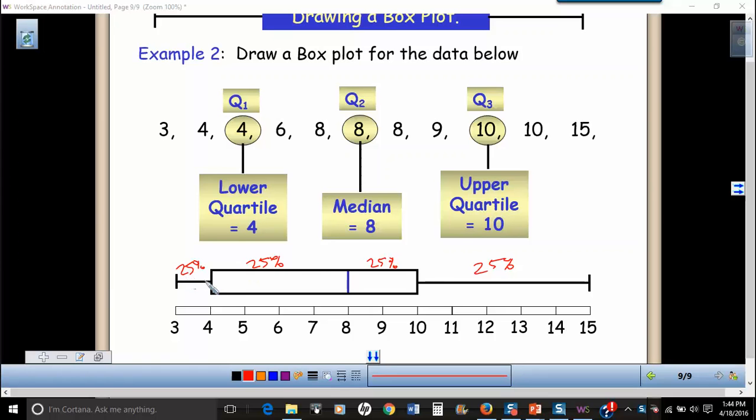The reason why this whisker here is shorter than this whisker here is because there's less of a difference in the values of this 25%. From three to four, there's only a difference of one value, so that's why the whisker is short over here. And for our upper whisker, the difference is five, so our whisker here is going to be longer than our whisker over here.